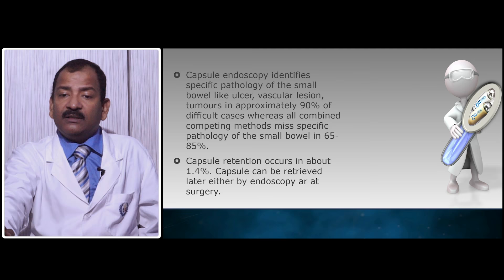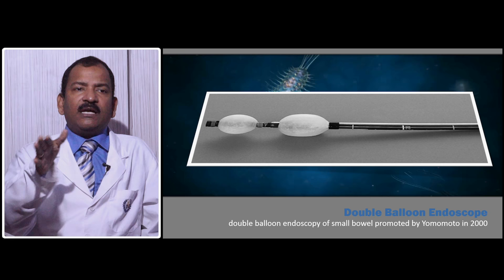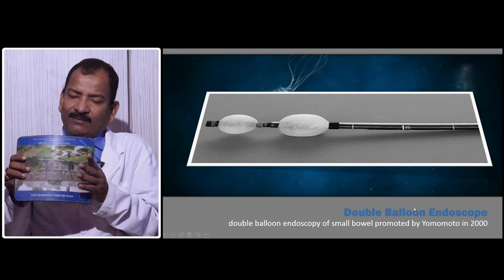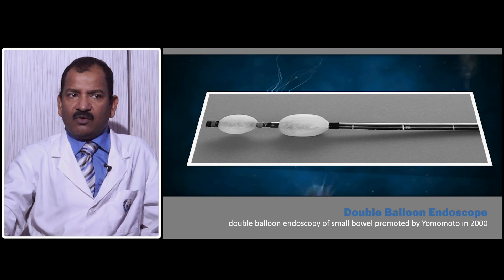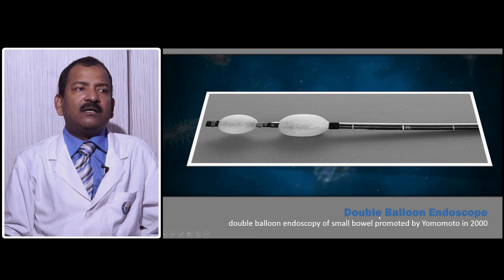Double balloon endoscopy is very good for seeing the terminal ileum because with a conventional endoscope we can go only up to the second part of the duodenum. After the second part of the duodenum there is an acute bend, and if you try to push the endoscope there will be a looping effect — the loop will be pushed and will not go ahead. In those situations the double balloon endoscope was invented, by Yamamoto in the year 2000.